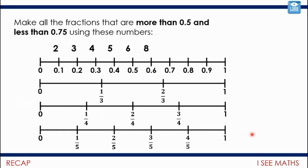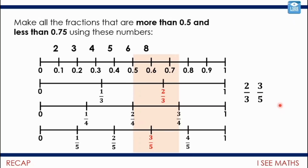Let's look at that. I'm going to put fraction lines on as well. We've got this decimal line going from 0 to 1, and we can see thirds, two thirds, quarters, and fifths. We're looking in this band of more than 0.5 and less than 0.75. I can see that one solution is two thirds. Another is three fifths — notice it's more than half because 2 is more than half of 3, and 3 is more than half of 5. Three quarters is not less than 0.75 — it's equivalent to 0.75. So we have two solutions so far.